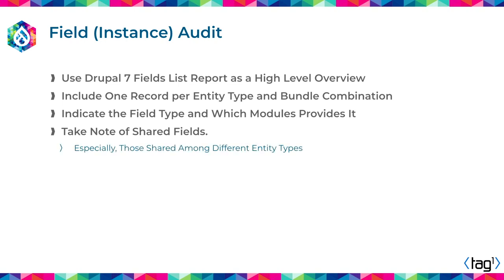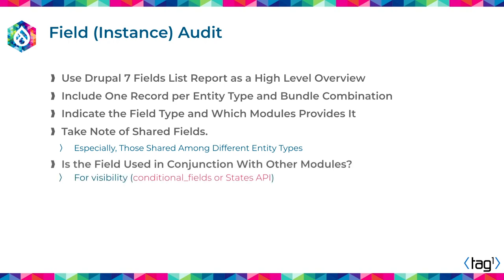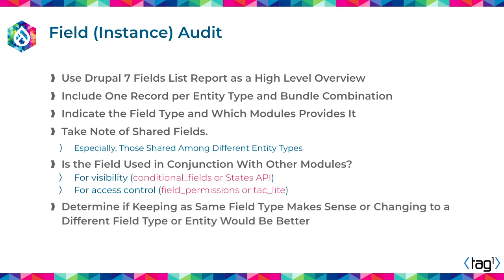Determine if the fields are used in conjunction with other modules for visibility purposes — like conditional fields or the States API — for access control like field permissions or TAC light. And determine if you want to keep the same field or make any transformations.